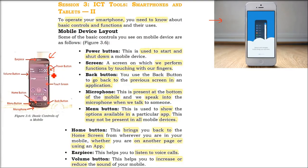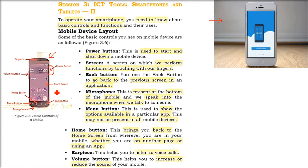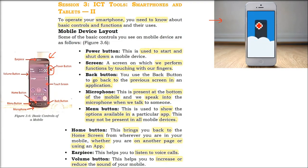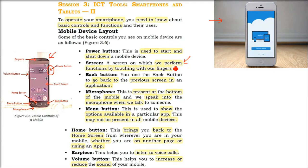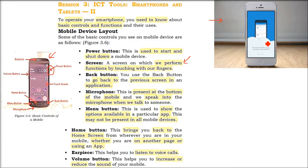The first one is the Power button. This is the basic thing — it will start and shut down your mobile device. There is a screen in the middle; this is the main part of your mobile or tablet. Basically, these Smartphones and Tablets use the touch user experience — you touch with your finger and it works.